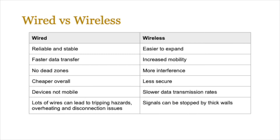Now let's look at the comparison between wired and wireless. Wired tends to be reliable and stable with a faster data transfer rate, no dead zones, and is cheaper overall. However, devices are not mobile and lots of wires can lead to tripping hazards, overheating, and disconnection issues. Wireless on the other hand is easier to expand and gives increased mobility and efficiency, but you get more interference, it's often less secure, has a slower data transmission rate, and signals can be stopped by thick walls.